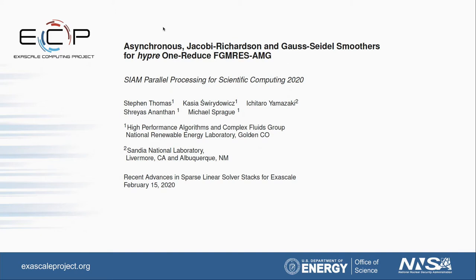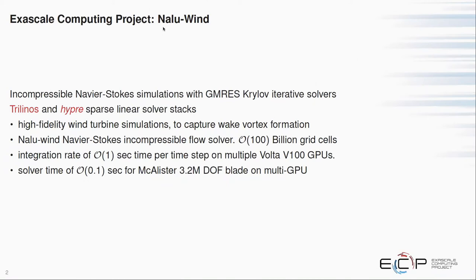This is a talk about preconditioners and smoothers, and how we're really looking for high performance on GPUs. The context of the work is that at NREL and with Sandia, we're collaborating on the NALU Wind project — very high resolution, very large-scale Navier-Stokes simulations of airflow around wind turbines. We're interested in the formation of wake vortices behind the turbines, looking at on the order of 100 billion grid cells. We really need exascale class computers for these simulations, and our focus over the last year has been on GPU implementations of the solver stacks.